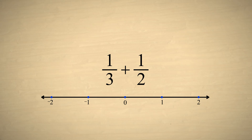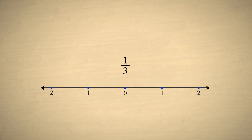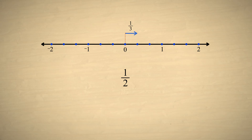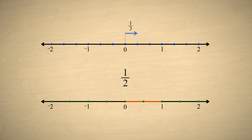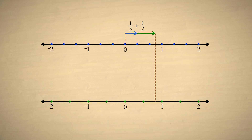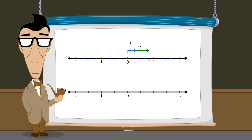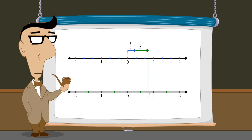We can use the number line to visualize this. Since the fraction one-third has a denominator of three, each unit length on the number line is divided into three equal divisions, and the fraction one-third is represented by one of these divisions. On the other hand, the fraction one-half has a denominator of two, so each unit length is divided into two equal divisions, and the fraction one-half is represented by one of these divisions. Unfortunately, when we add these two fractions, the sum won't fit into either set of divisions — whether we use three divisions per unit or two divisions per unit.